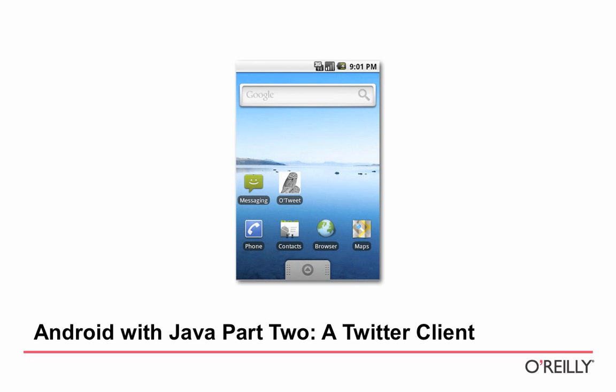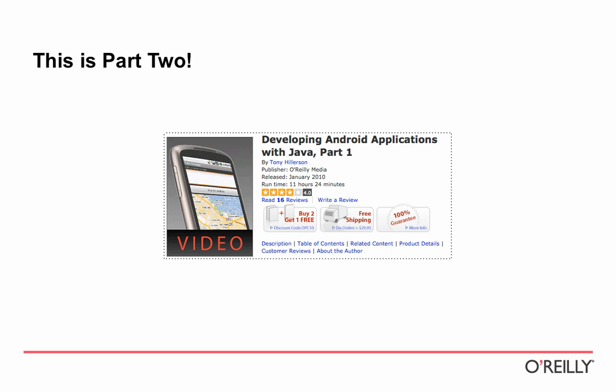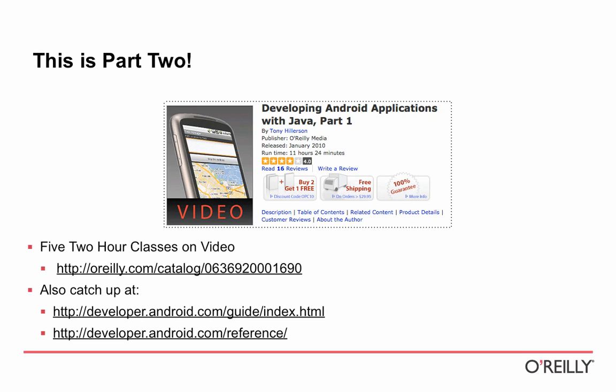Welcome to Android with Java, part 2, wherein we build a Twitter client. You can see in the middle of my Android emulator screenshot the icon of the app we'll be building. This is part 2 — the first part was 'Developing Android Applications with Java', which you can get on O'Reilly. I wanted to go over a little bit of what we talked about in the first part, so if anybody hasn't bought that yet, you can get an idea of what's in there.